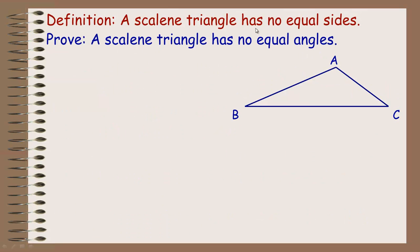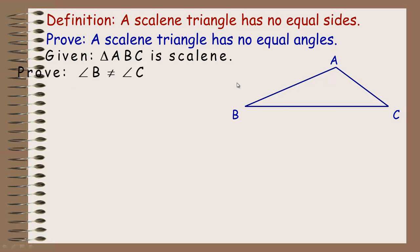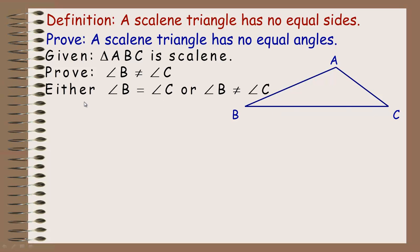One more example. A scalene triangle is defined as a triangle that has no equal sides. What we want to prove is that a scalene triangle also has no equal angles. We're given that the triangle is scalene — meaning AC, AB, and BC are all of different lengths. We want to prove that angle B and angle C cannot be equal. By indirect proof, we list the two possibilities: either angle B and C are equal or they're not. We assume they are equal and will show that leads to a contradiction.